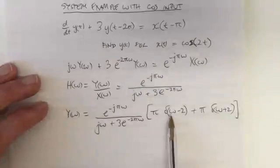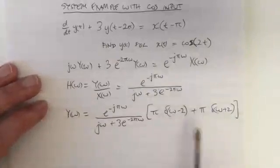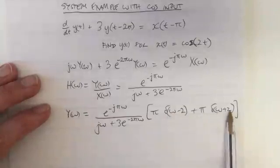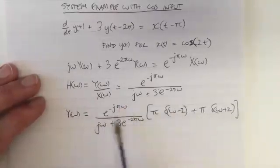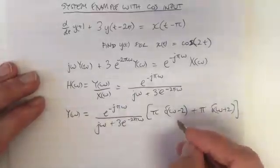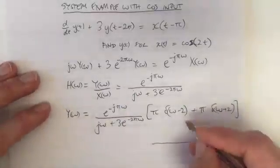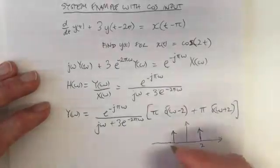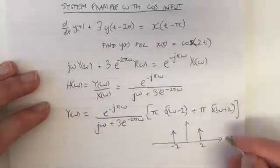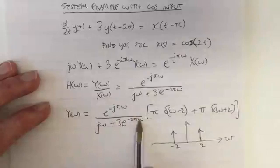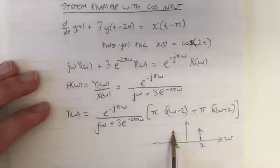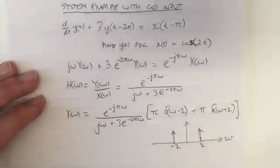Now we remember that these delta functions are zero for all values except where omega equals 2 and omega equals minus 2. So there are only two values of omega we have to worry about, because the delta functions are zero everywhere except at plus 2 and minus 2. H(ω) exists at all omega, but when we multiply by these delta functions, everything is multiplied by zero at all values of omega except at 2 and minus 2.